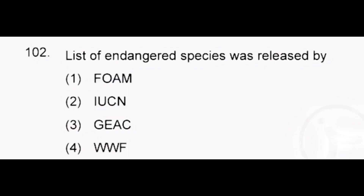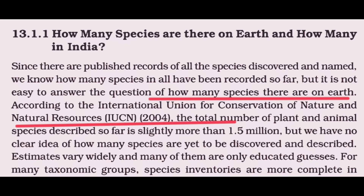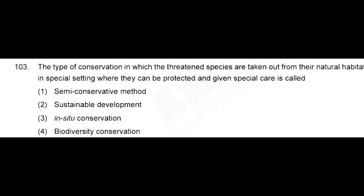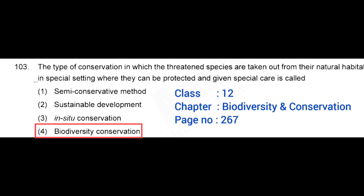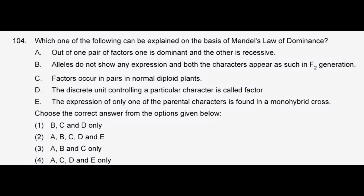List of endangered species was released by — correct answer: option 2, IUCN. The type of conservation in which threatened species are taken out from their natural habitats into a special setting where they can be protected and given special care is called — correct answer: option 4, biodiversity conservation.